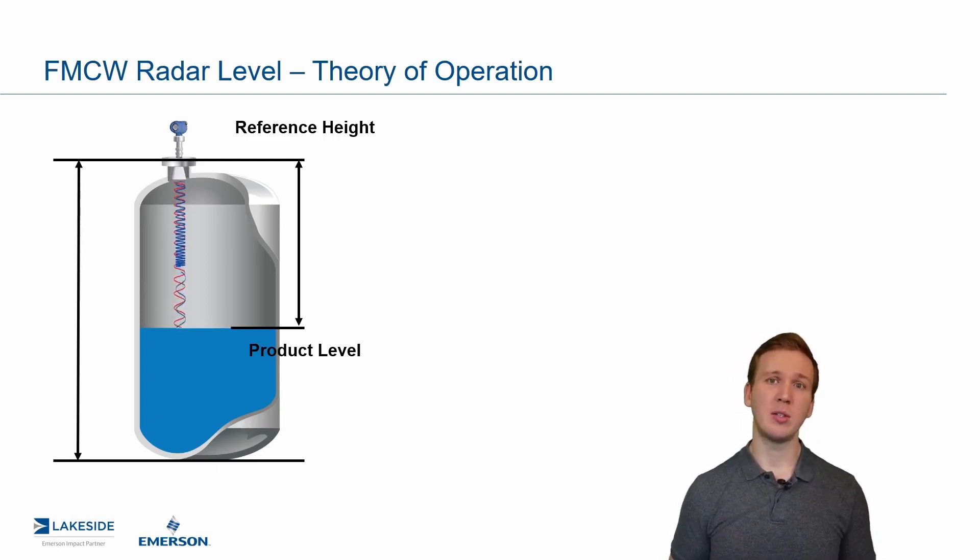Instead of operating at a fixed frequency with a fixed speed, it slightly changes the frequency it operates at, called a fast sweep. What it does is it tracks the specific frequencies as they're emitted and as they're received. That way, it doesn't confuse anything.